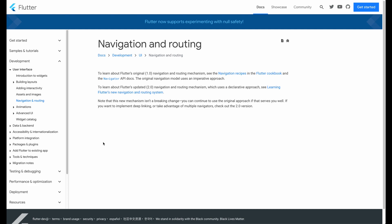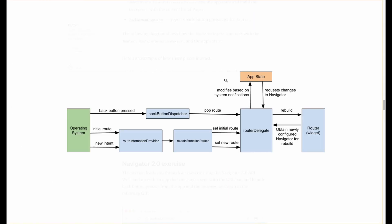Flutter navigation has been recently updated to Navigation and Routing 2.0. You can still use 1.0, but for this video we will use 2.0. The idea is that when the system initially starts, it will fetch the route state, pass it through the route information parser and via the route delegate it will trigger a rebuild of the widgets. Whenever any actions are triggered, this will trigger the route delegate, which triggers the app state, and via the information parser it will trigger another build and update the route state.